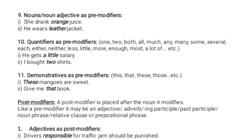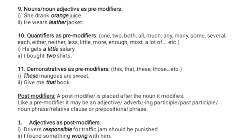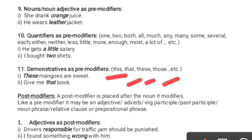The next pre-modifier is demonstratives. Demonstratives are four specific words: 'this,' 'that,' 'these,' and 'those.' These four words are used as demonstratives in pre-modification.